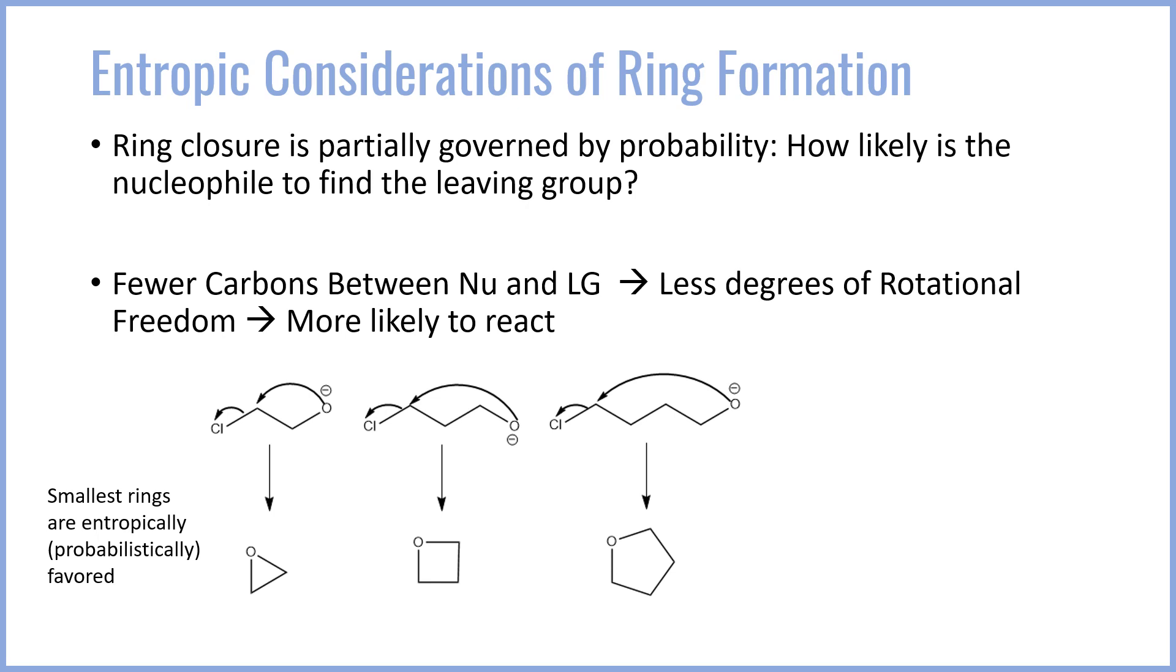Remember the transition state requirements remain for SN2 so the nucleophile has to be close enough and in the proper orientation to actually attack that back side orbital. If the straight chain is flopping all over the place and rotating in 3D space, the more it does that the less likely the nucleophile is to find the leaving group. Finally in the case of a hexagonal ring or a six-membered ring we're the least likely for the ring to close, and so in terms of probability the smallest rings are actually favored even though they have ring strain which is a bit counterintuitive.